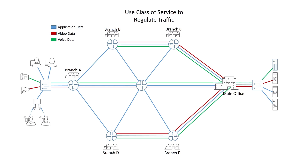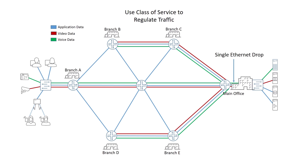They had a single outbound Ethernet link to their provider without any VLANs or circuit connectivity where normal class of service could be applied on an individual circuit or VLAN basis. They could classify their voice, video, and data traffic at the edge, but they couldn't regulate it on a per-branch basis.